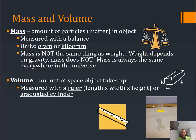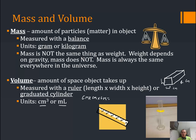Or if we have something that's got a funny shape, we'll use a graduated cylinder. Graduated just means it's got markings on it; it's cylindrical in shape. We can use that and the water displacement method to find volume. The units are cubic centimeters or milliliters — centimeters times centimeters times centimeters gives a cubic centimeter. One milliliter equals one cubic centimeter; they both describe the same amount of space.